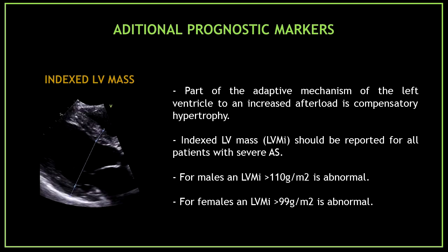Another additional prognostic marker is the indexed left ventricular mass. Part of the adaptive mechanism of the left ventricle to increased afterload is compensatory hypertrophy. Indexed left ventricular mass should be reported for all patients with severe aortic stenosis, and abnormal values differ for males and females.